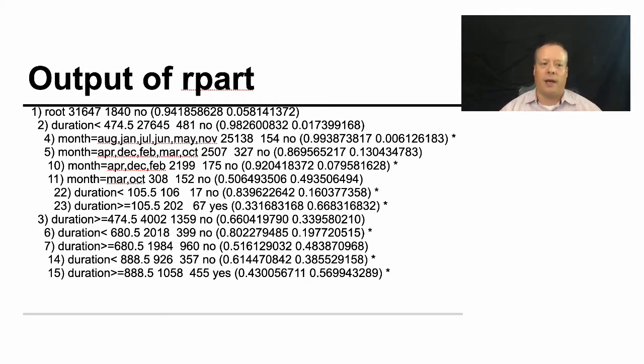So here is kind of what it puts out. So it shows the results at the top that 3,164.7 are yes-nos, 1,840 are yeses, and it gives the probabilities of each of those occurring. And then it splits first based upon duration. If it's less than 474.5, then you still wind up with 27,481. And you see all these splits along the way.